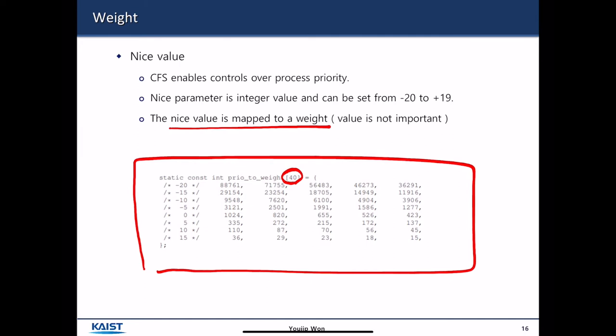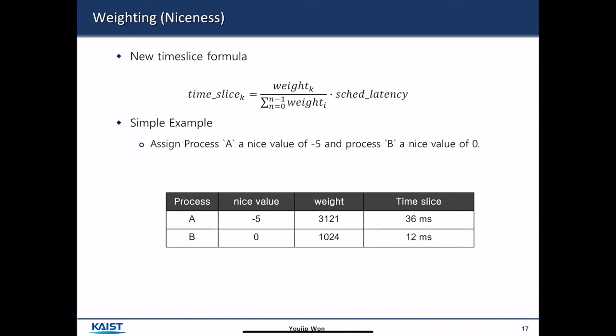Let's see how the weight value is used. Weight value, the niceness, is used to compute the time slice as follows. So in normal situation, the time slice is the value of sched_latency divided by the number of processes in the system. However, if some process has higher nice value, then the length of the time slice is weighted as such. For example, let's say there are two processes A and B, and A has nice value of minus 5, and then B has nice value of 0. In that case, the weight of minus 5 is 3121. And the weight of nice value of 0 corresponds to 1024.